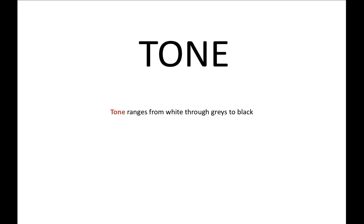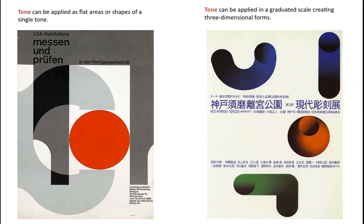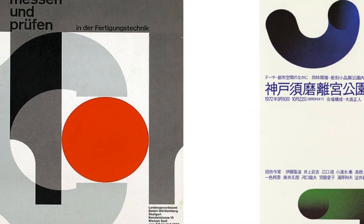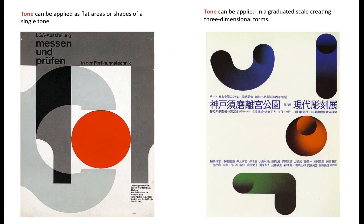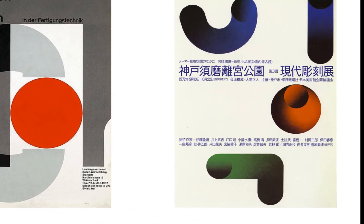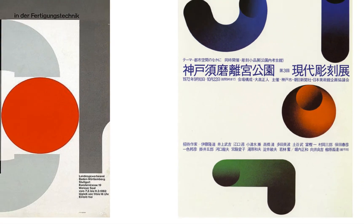Tone. Tone ranges from white through greys to black. Tone describes the play of light and shadow on an object, defining its form or shape. Tone can be applied as flat areas or shapes of a single tone. Tone can be applied in a graduated scale creating three-dimensional forms.